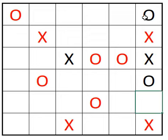If we have three of one symbol in a row or column, then all the other cells must be the other symbol.